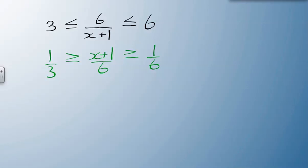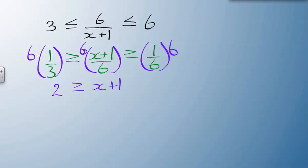Our next step is we can multiply by our lowest common denominator. We're going to multiply by 6. 6 times one-third gives me 2, which is greater than x plus 1, which is greater than 1.